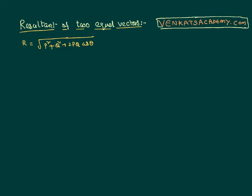Taking this into consideration, I would like to write different possible cases. For example, I have two vectors p and p — both are equal and they are in the same direction. I want to know the resultant of these two vectors. It is very clear that cosθ equals 1, as the two vectors are parallel to each other: θ equals 0, and cos 0 equals 1.